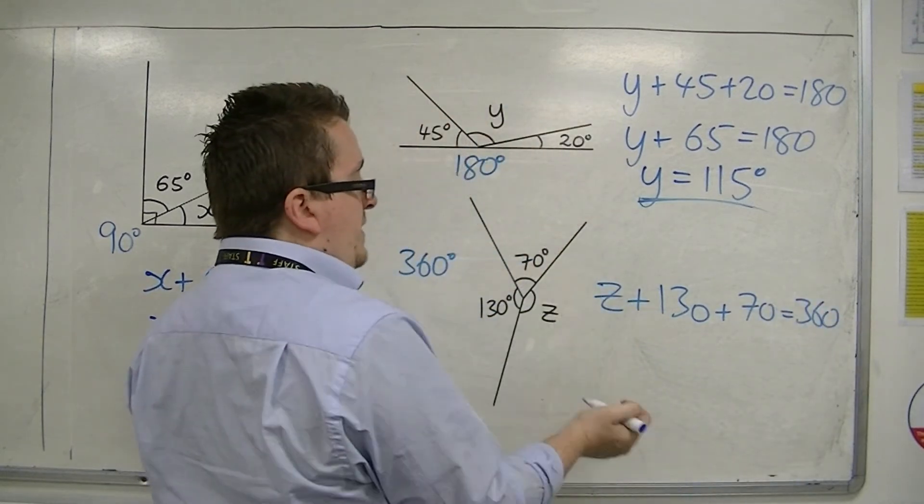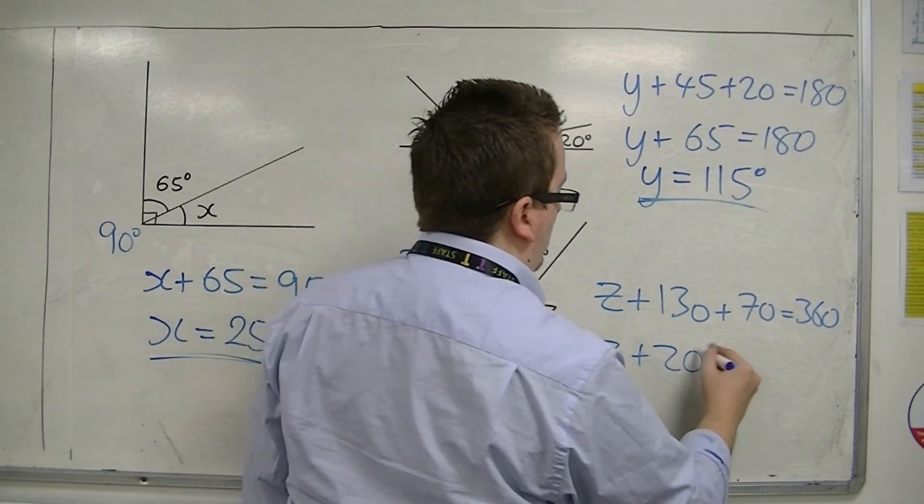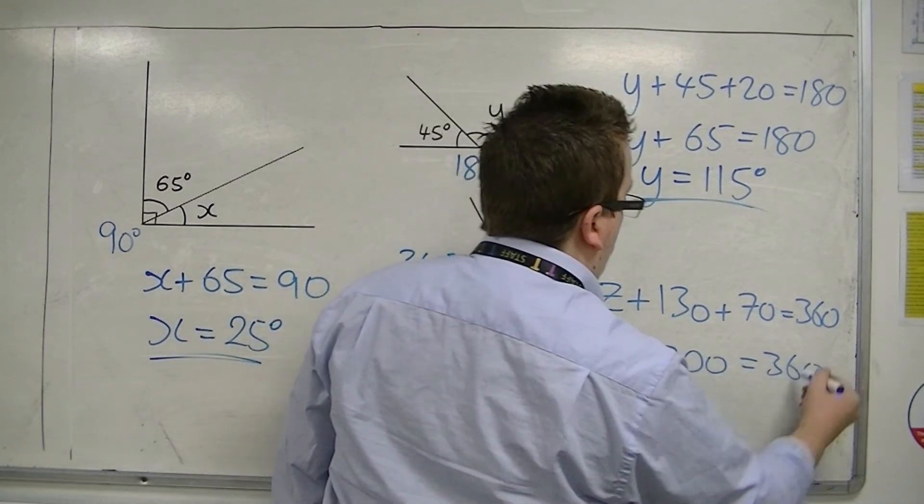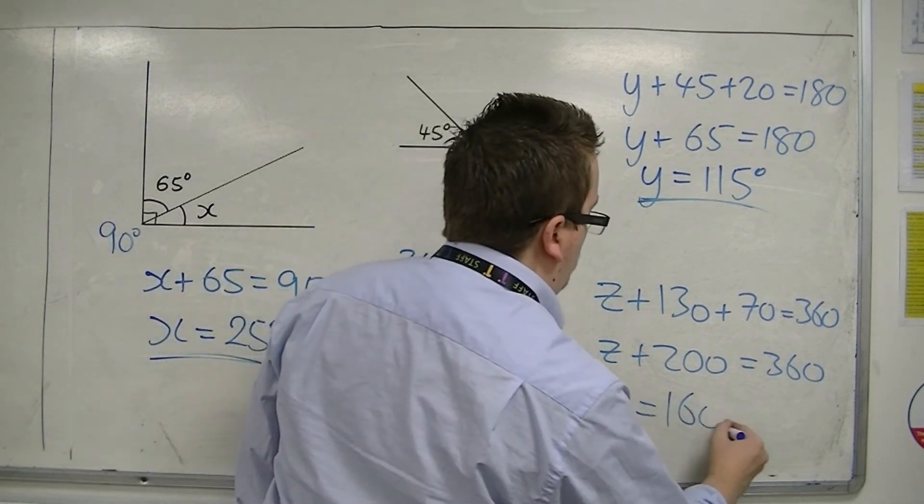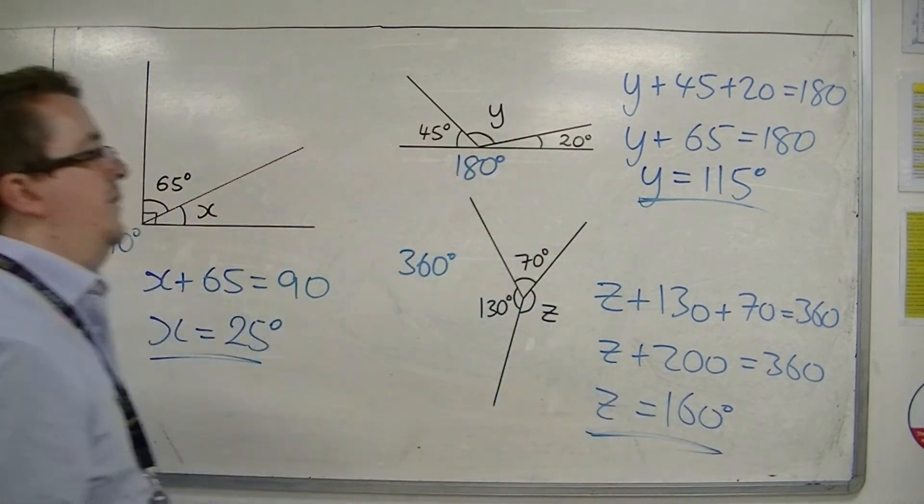So 130 plus 70 is 200. So take 200 away from 360 and you get left with 160 degrees. So z is 160.